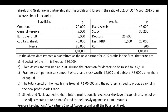Sheila and Neela are in partnership, sharing profits and losses in the ratio of 3 to 2. This is their old profit sharing ratio. On the given date, Pramila is admitted as a new partner for 20% profits in the firm. If you write it as a fraction, it is 20 by 100, which means 1 by 5 — a one-fifth share in the profits.